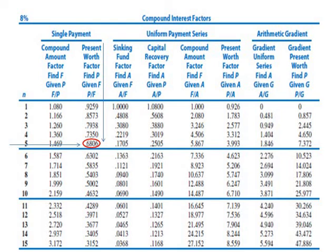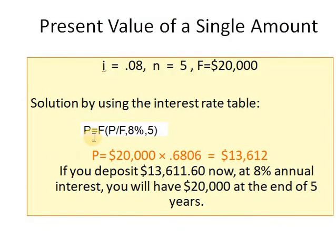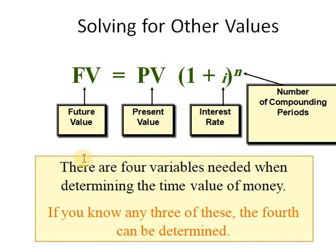I multiply the factor by the future value: P equals $20,000 times the factor from the table, giving the same amount as the equation. So there are two methods to calculate the equivalence of a single amount in the present: use the equation or use the interest table. If you need to solve for i or n instead, use the equation — with four variables, knowing three allows you to find the fourth.